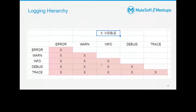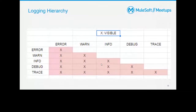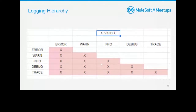Regarding the logging hierarchy: in production you don't want to see debug or trace level logs. The hierarchy from left to right is — error, warning, info, debug, trace. If you set the level to error, only errors are shown. If you set it to info, you get error, warning, and info. Trace is the top-most level, showing all. The log level can be set in your loggers in Anypoint Studio during development.